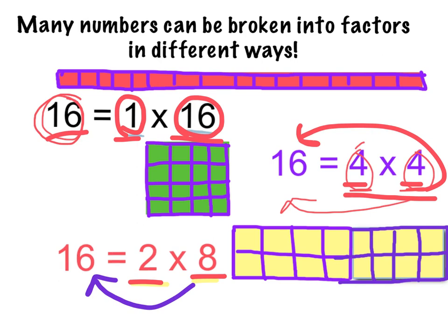Now, boys and girls, underneath your factor of 16, I want you to choose one of these arrays to draw and model how to make 16. You're going to write the factors that make 16. You can use 1 times 16 and draw that array, or choose 4 times 4 and draw the array, or choose 2 times 8 and draw the array for that one. Go ahead and choose one of these factor pairs to make 16 and draw your array for the multiplication sentence. Go ahead and do that now.